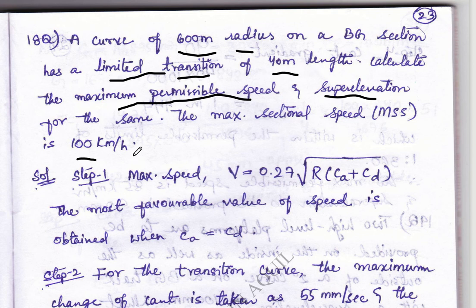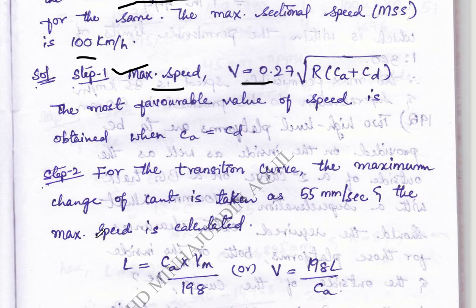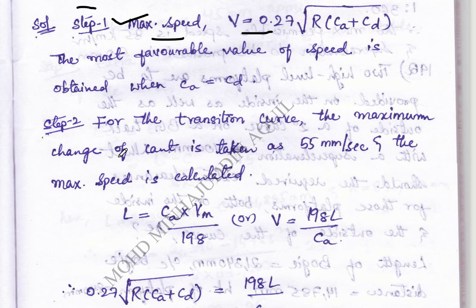Coming towards the solution, in the first step we are calculating maximum speed using the formula V equal to 0.27 times the square root of R into CA plus CD. The most favorable value of speed is obtained when CA equals CD. This is step 1 completed.